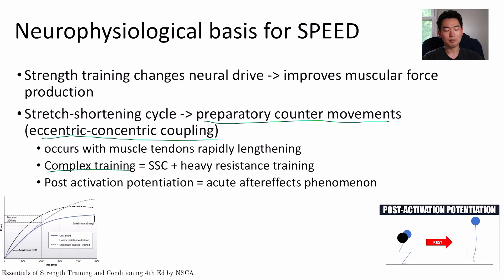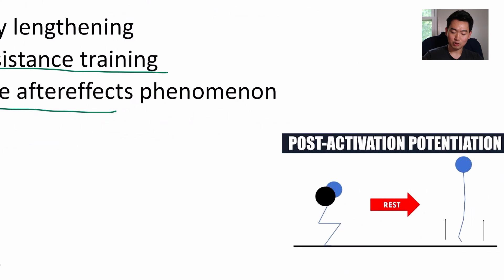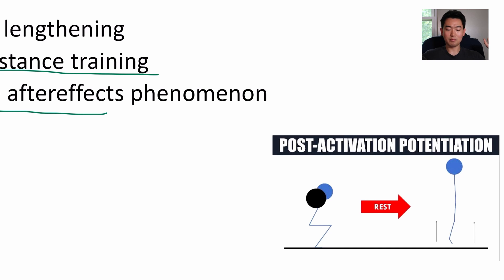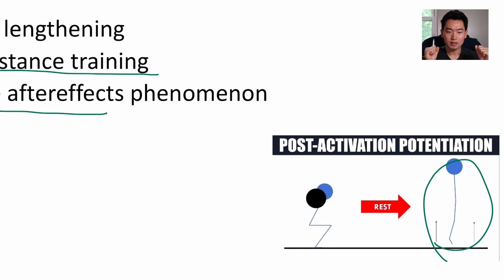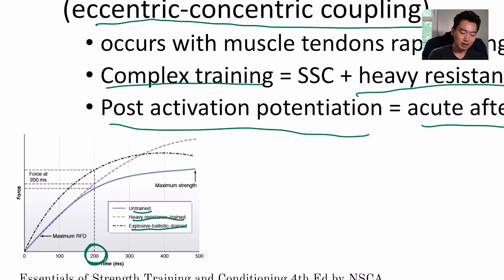You can make this complex training by adding heavy resistance training. Post-activation potentiation is when heavy resistance training comes into play — you're looking for positive acute after-effects. For example, you go into a maximally loaded squat, do a couple reps, rest, and then observe positive after-effects during a subsequent jump. On the graph comparing untrained, heavy resistance trained, and explosive ballistic trained individuals, at 200 milliseconds the most force is produced by the explosive ballistic trained individual.